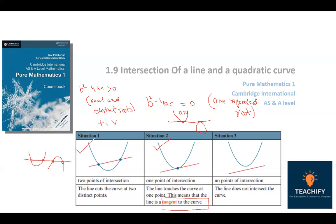In the third case, there is a difference between the line and the curve when the roots are complex. Complex means there is an imaginary component — an iota — under the root sign. There is a gap between the peak point and the intersection point, so no points of intersection occur. The line does not intersect the curve.